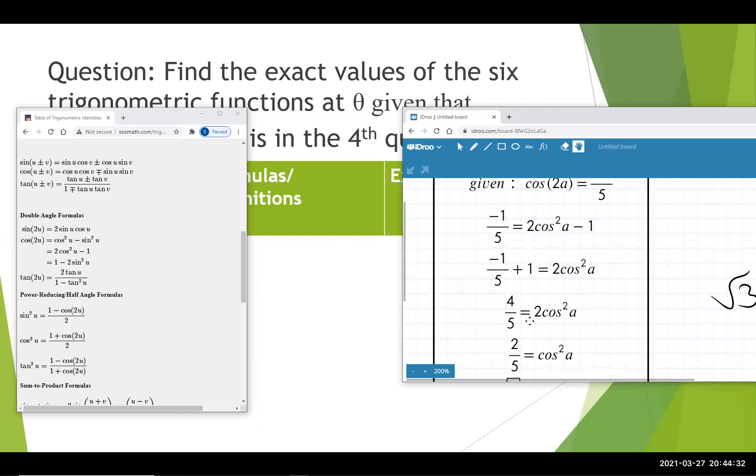Next, I'm going to divide both sides by 2. So we divide by 2 and divide this by 2. We'll get 2 fifths is equal to cosine squared of a.